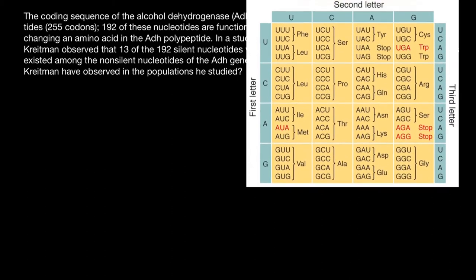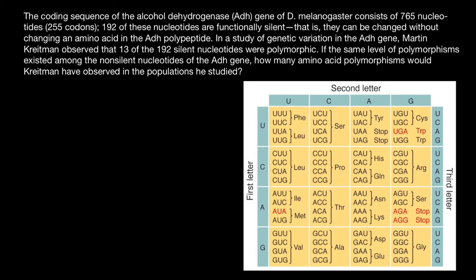First, take a look at this codon table. 20 amino acids are coded by 64 combinations; three combinations are stop codons that don't code for amino acids, and 61 code for the 20 amino acids. That means that on average, three combinations code for one amino acid — sometimes four, sometimes two, but on average three — because we have four nucleotides for each position.